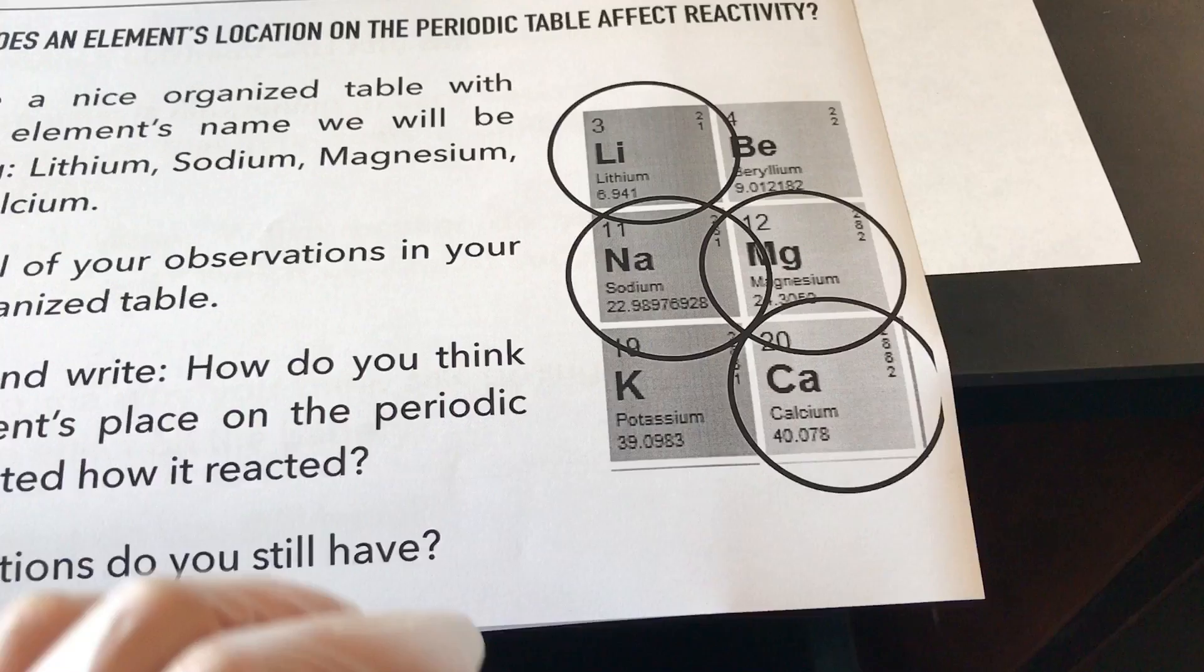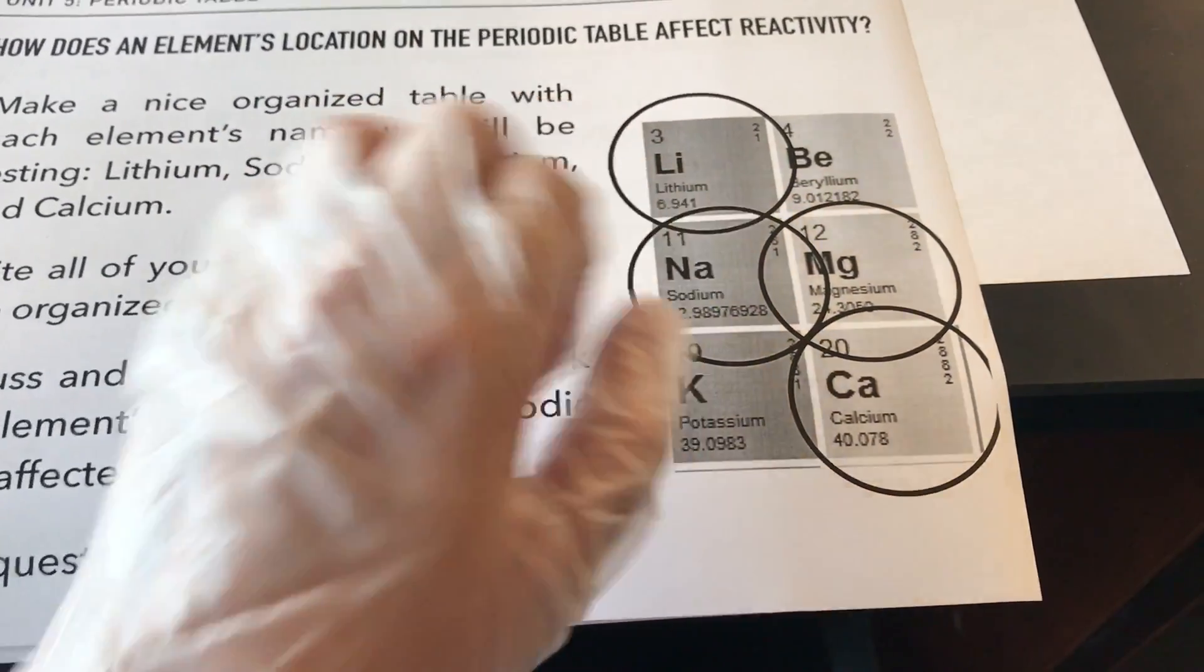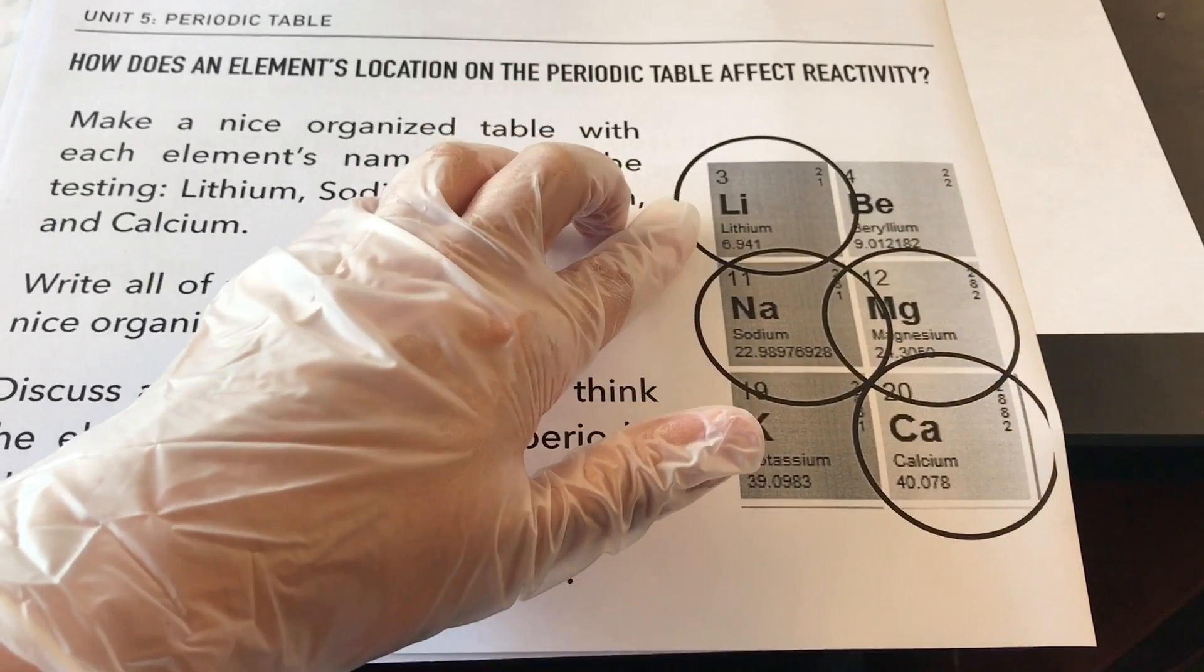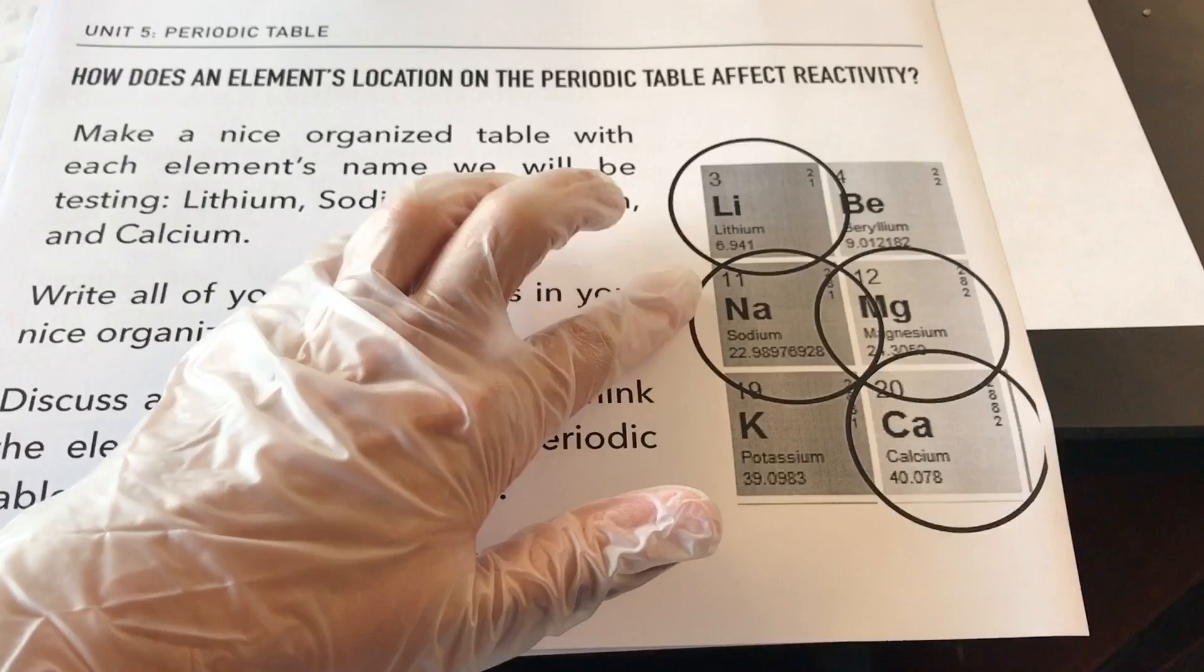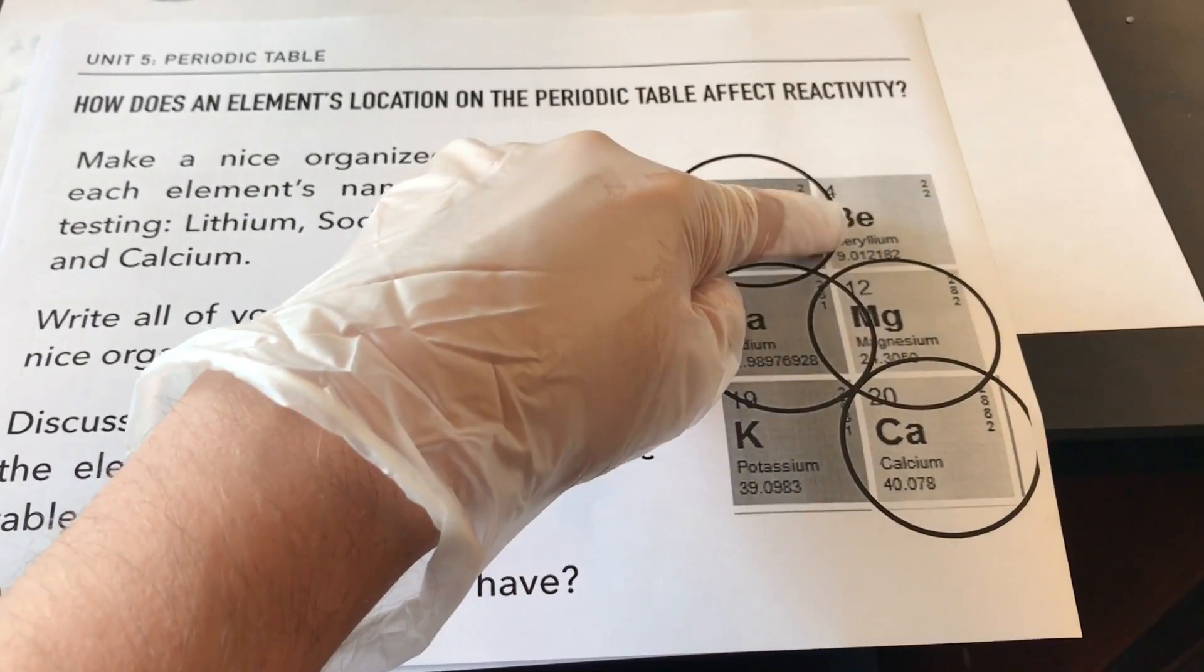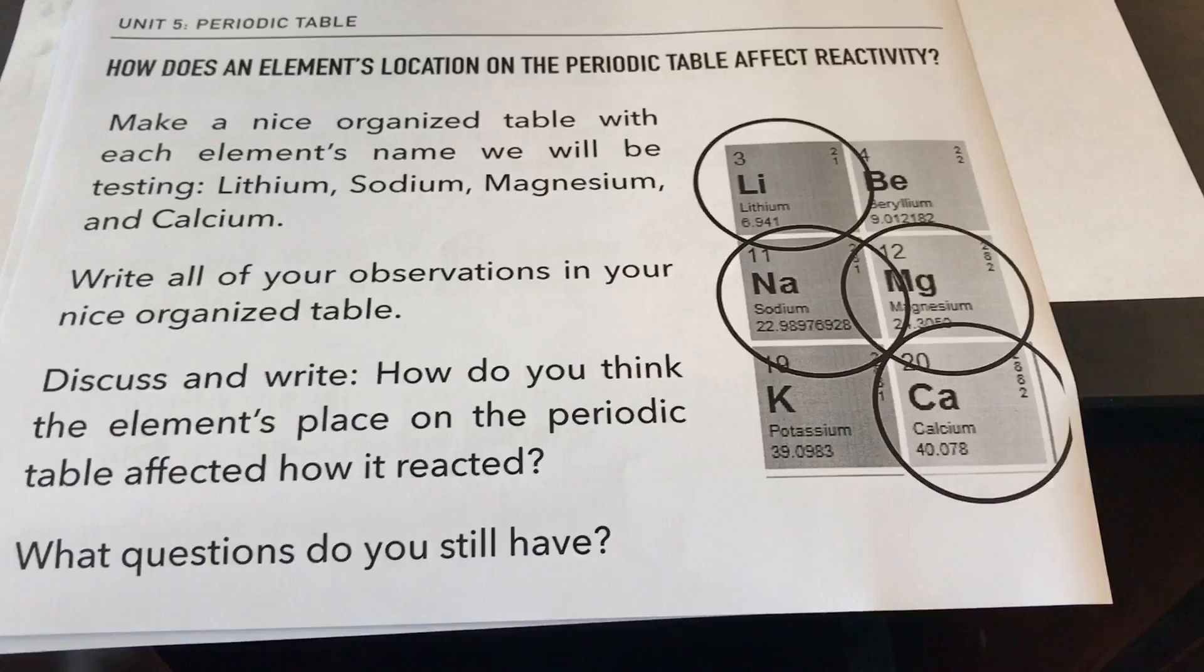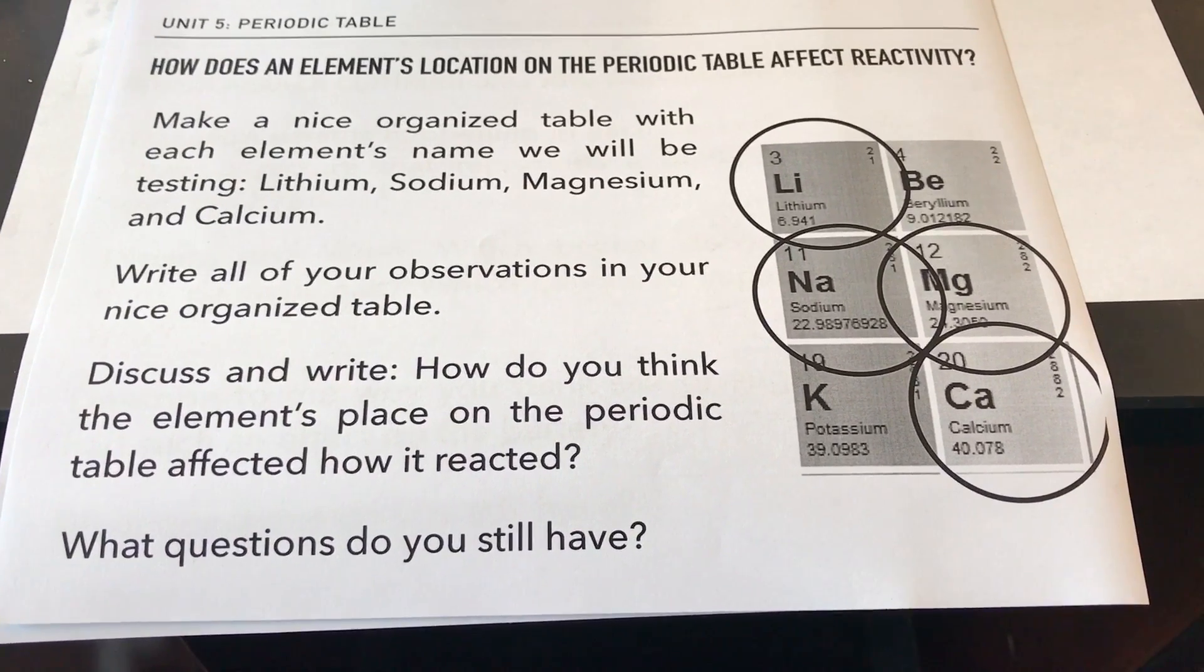And if we were to take a periodic table and kind of cut out those elements, these are the particular ones we're looking at. So we have lithium, and then below that is sodium, and below that is potassium. Then next to lithium on the right is beryllium, next to sodium is magnesium, and next to potassium is calcium. So it's important that you know where the elements that we're going to be testing are located on the periodic table and their relation to the other elements that we're going to be testing.